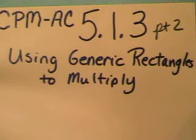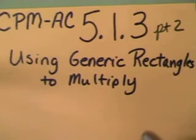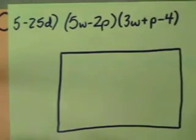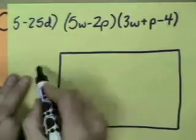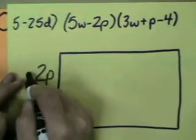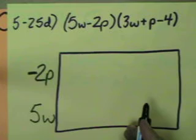Welcome to part two. We didn't have enough time, so we're just going to go ahead and keep going. We've got another generic rectangle. Let's see, we've got two pieces, 5W and 2P, and it's a negative because the sign on the left goes with it.